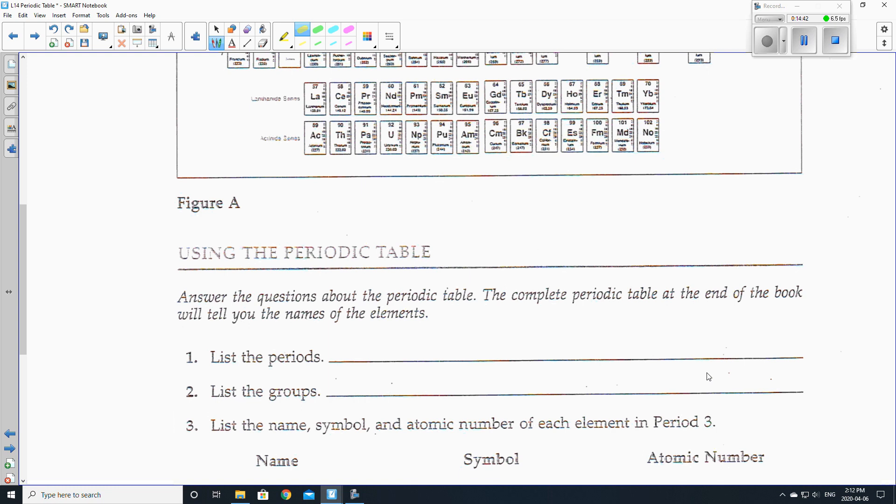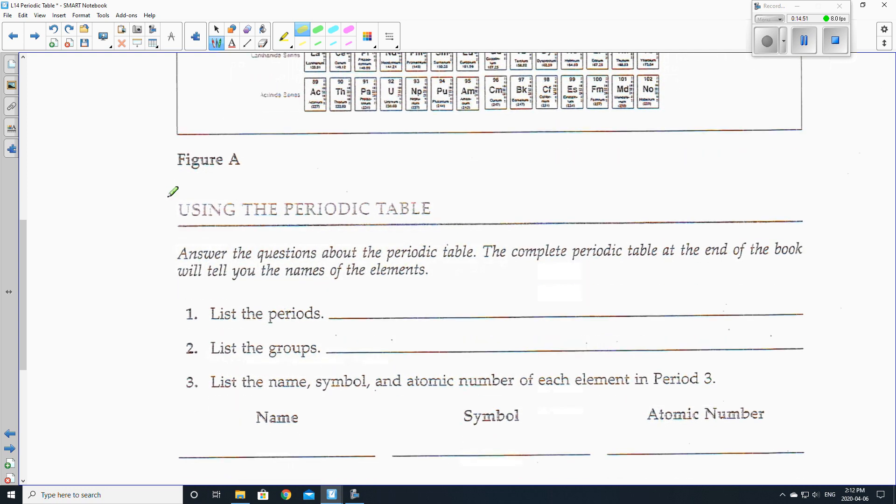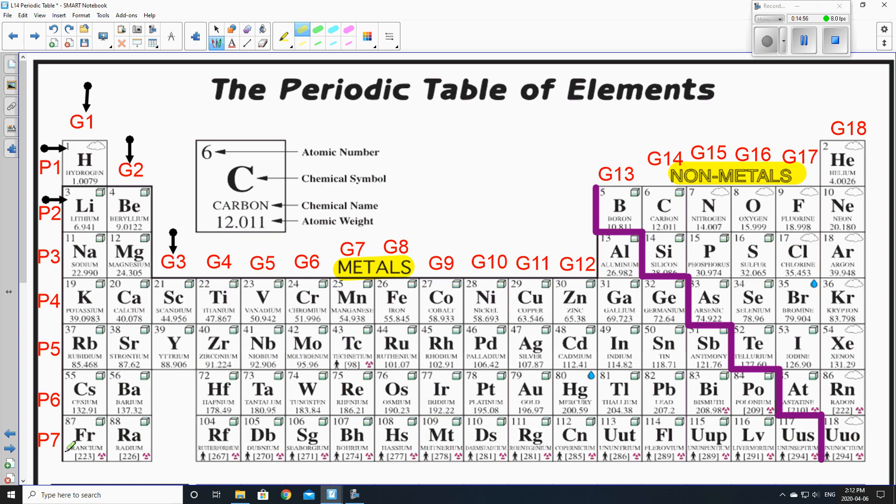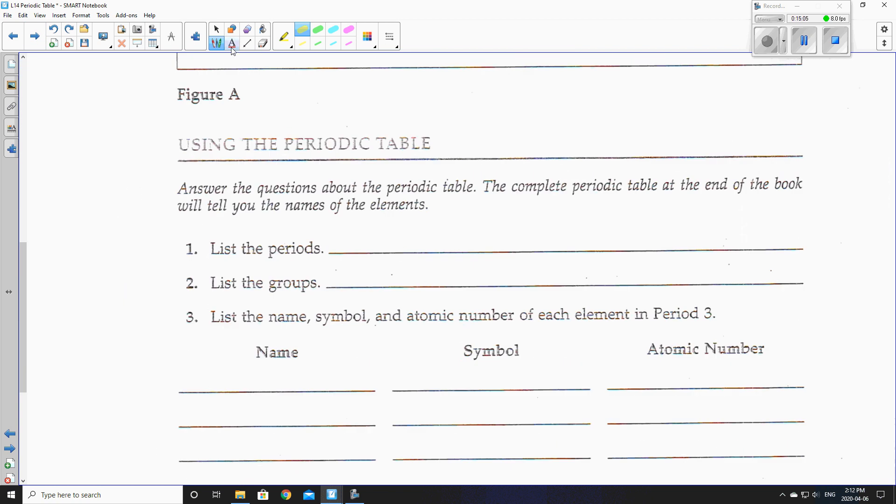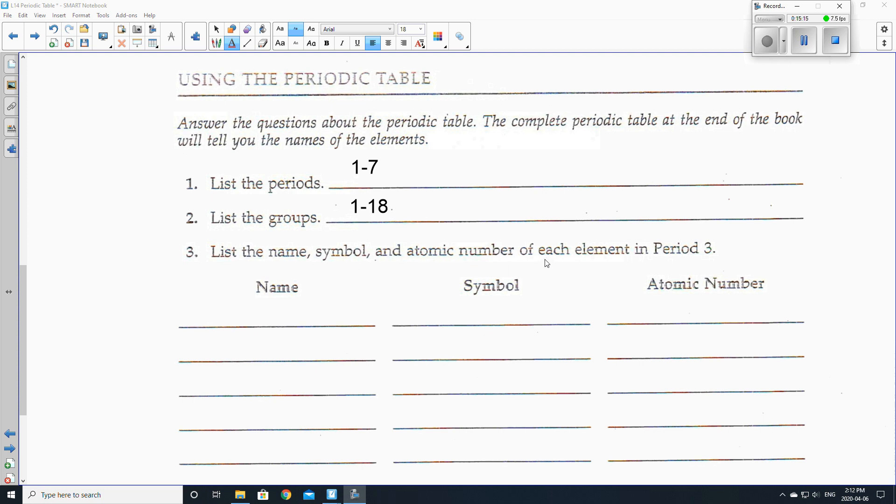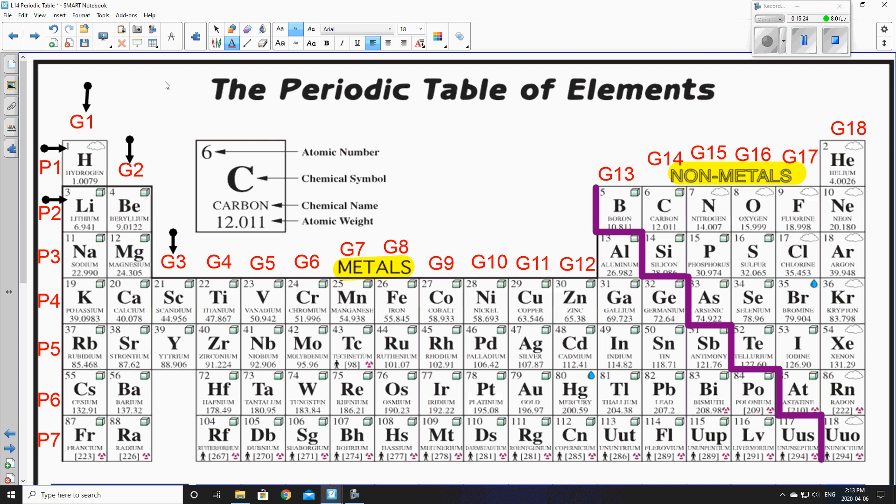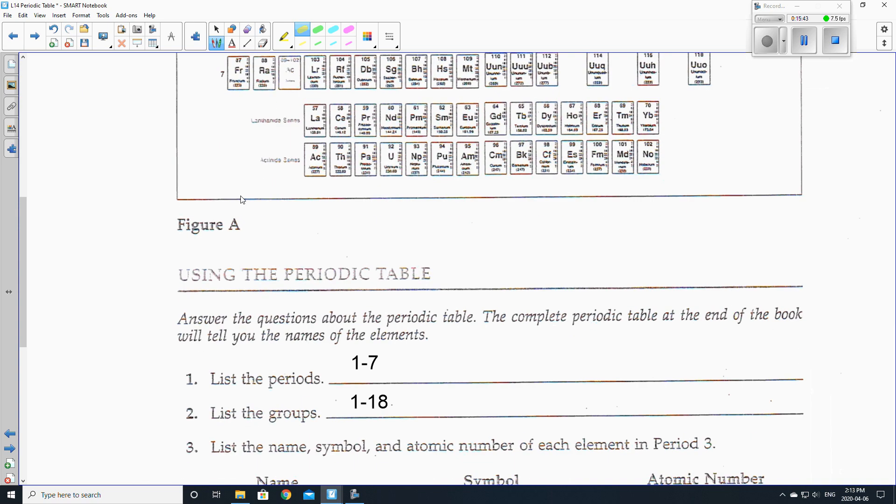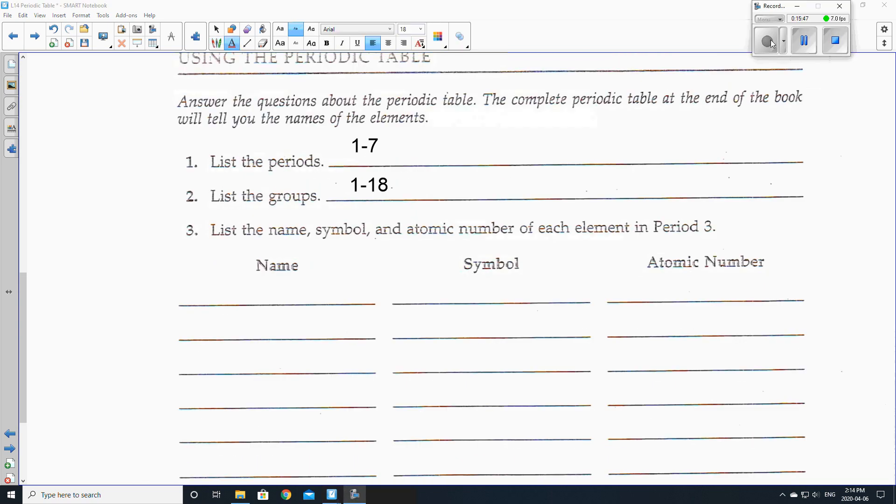So let's take a look at some questions here. Answer the questions about the periodic table. The complete periodic table at the end of the book will tell you about the names of the elements, or you can just look at the periodic table that I've done. So list the periods. So if you remember, how many periods were there and how many groups were there? So there are seven periods, and take a look at how many groups there are. There are 18 groups. List the name, symbol, and atomic number of each element in period three. So let's look that up. Let's go back to our good periodic table. So we're looking for period three. What does that mean? It means that we are going to go all the way across here and keep going all the way across here. We're going to get the name, the symbol, and then the element, the atomic number.